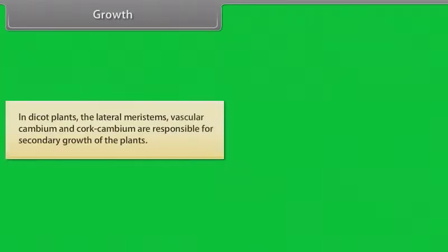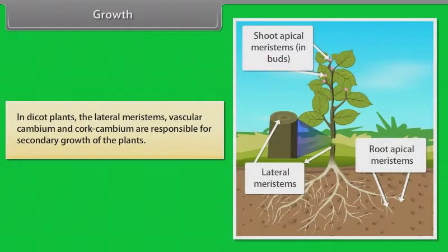In dicot plants, the lateral meristems, vascular cambium and cork cambium are responsible for secondary growth of the plants.